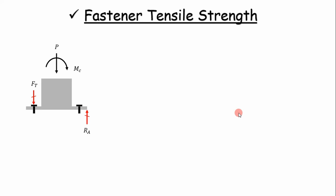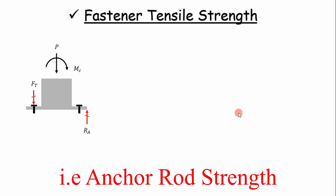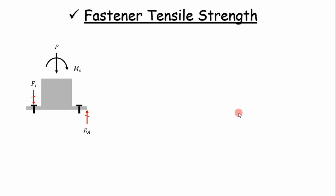The third design criteria is fastener tensile strength — how many fasteners and what size do I need to ensure the fastener can hold the column down if it tips? We're going to analyze this at the tipping condition. The tipping condition is when you have the load at the end as a point load — that's the worst case. If the load gets to the end, the column starts to turn over, so that's how we design this fastener.